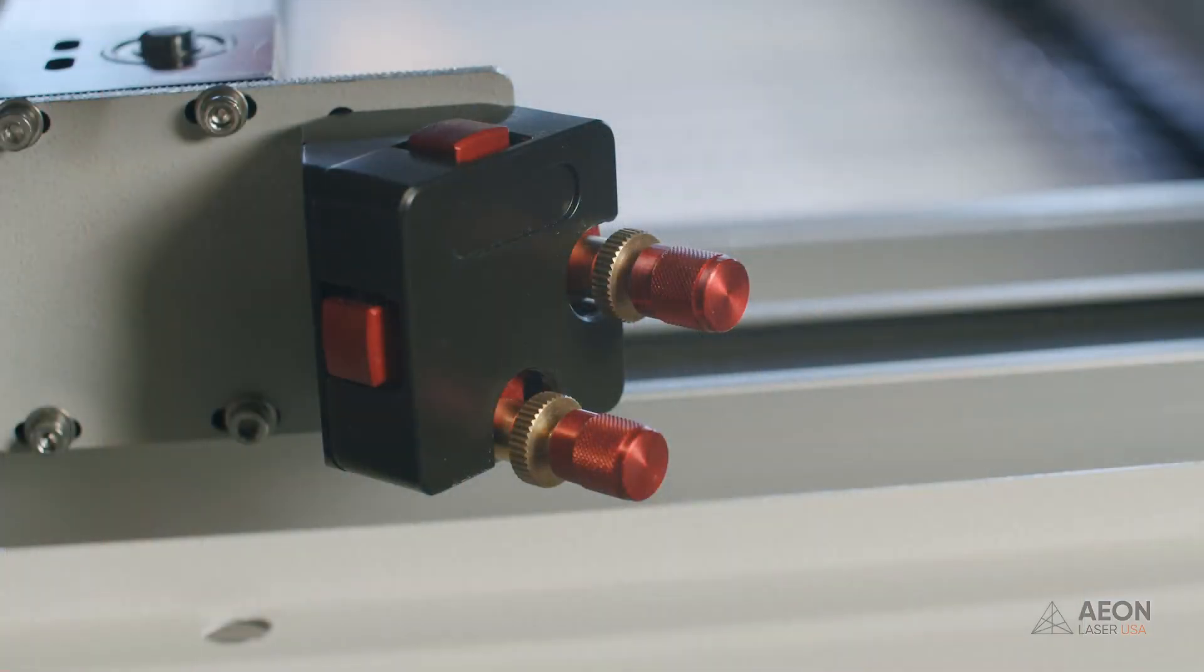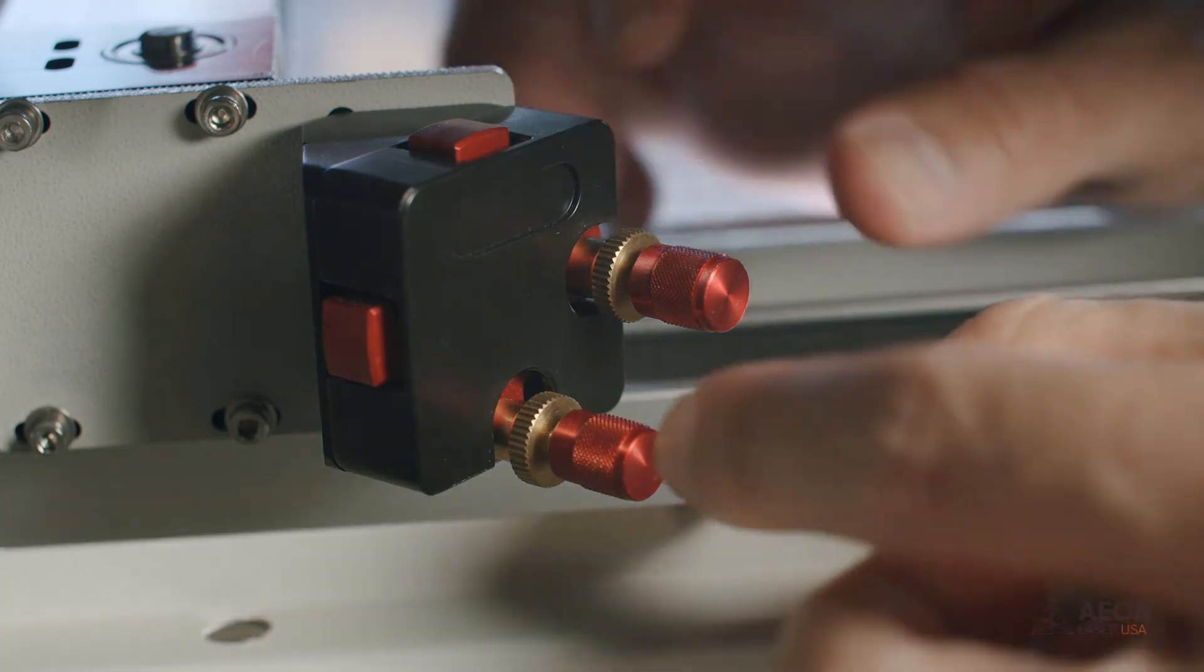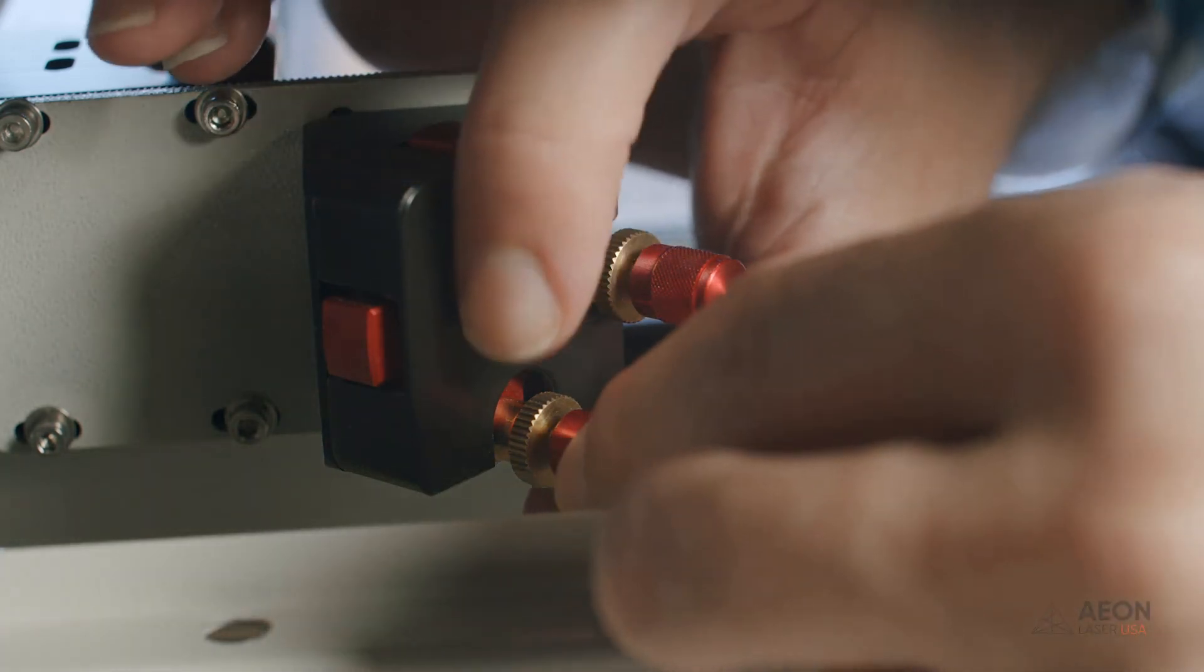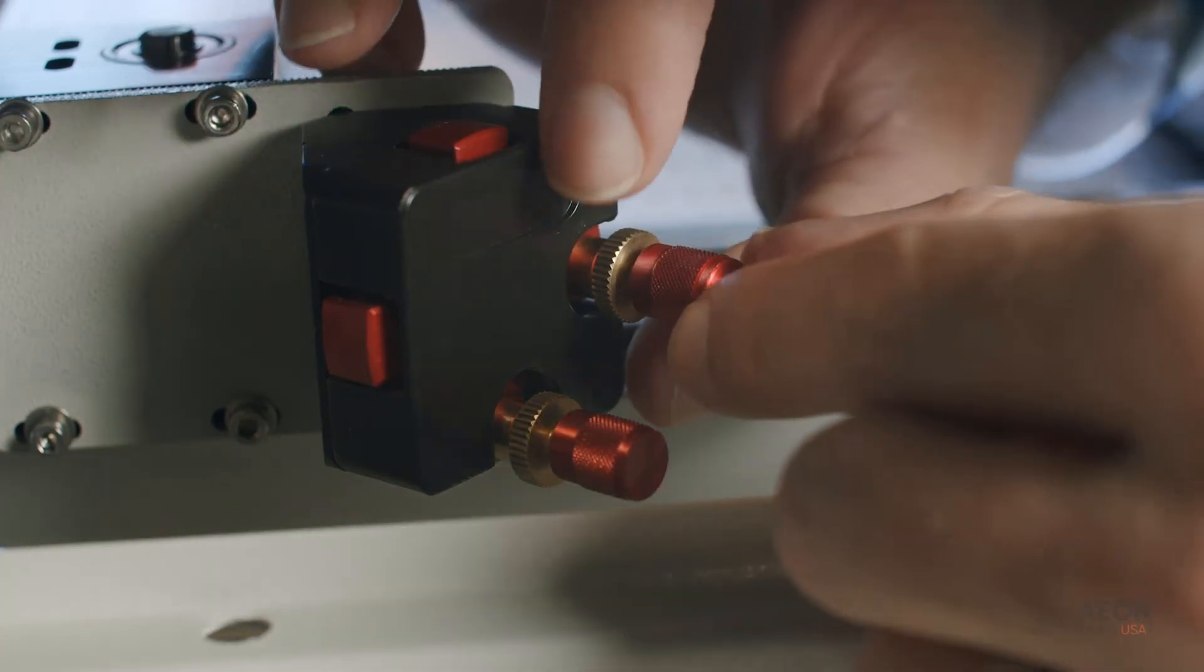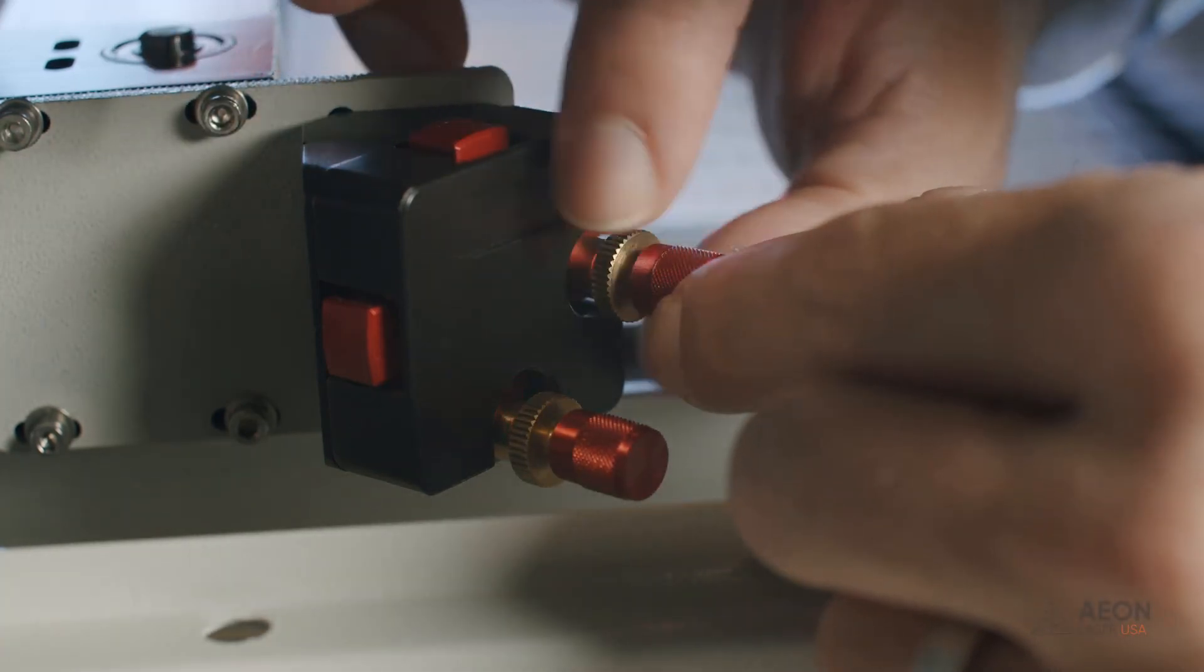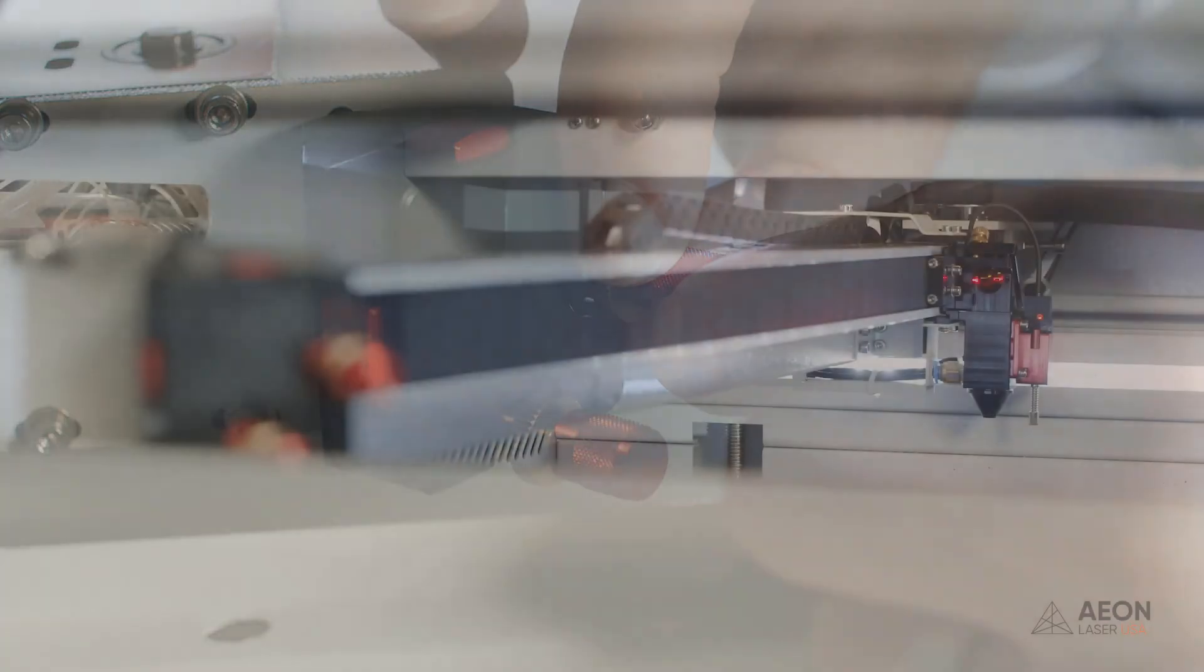All right, now we've done first base, second base, now it's time to go to third base and bring it home. Before we do that, let's make sure that we lock down these adjustment knobs. Again, you want to hold down the red knob and tighten up the brass part of the knob with the other.